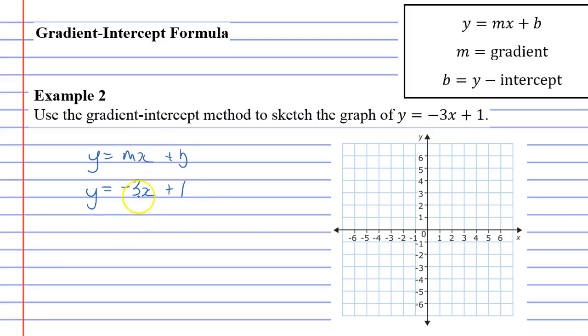And after doing that we can see what m equals and we can see what b equals. m is equal to negative 3, m being our gradient, and b equal to 1, which is our y-intercept.